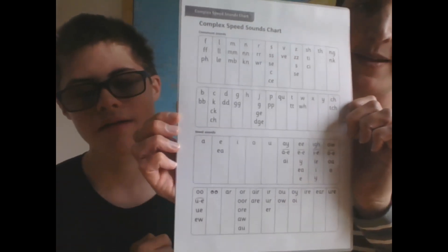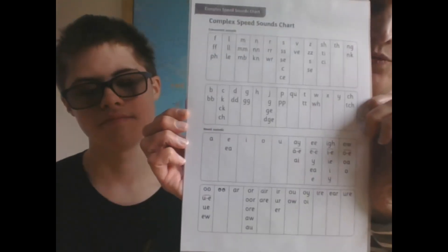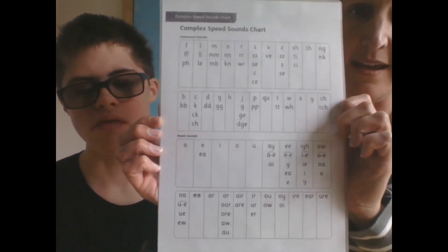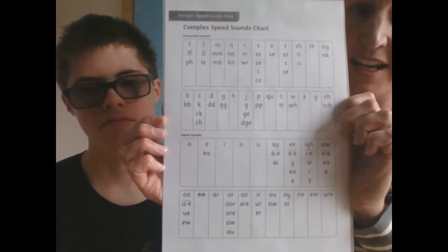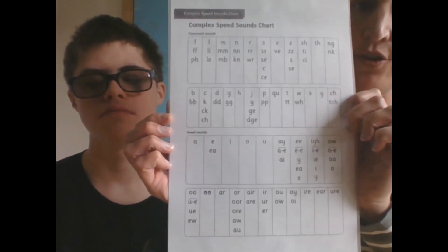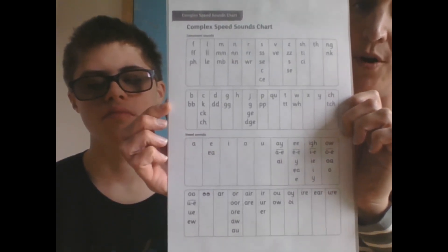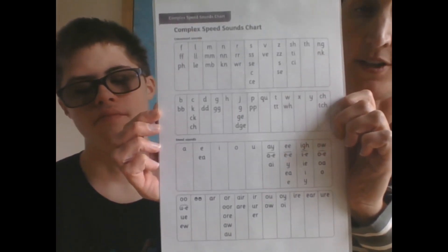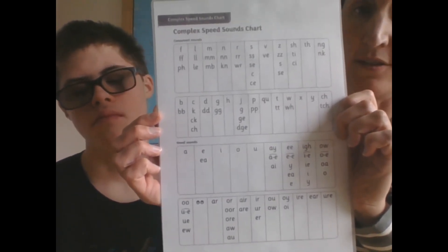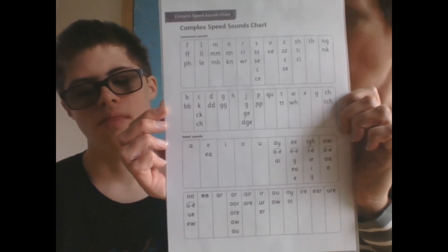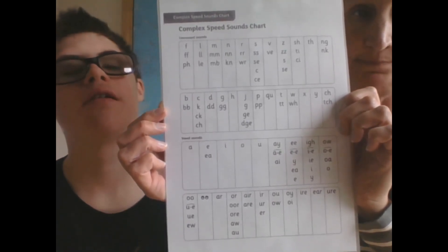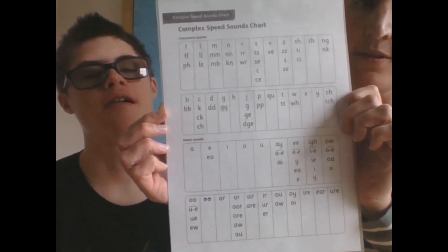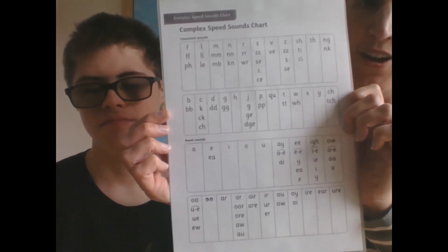The complex speed sounds chart looks really complicated and really tricky. But actually, it's really quite easy if you remember that each box represents a sound that we use in the English language. They're not in alphabetical order. They are the sounds that we make.